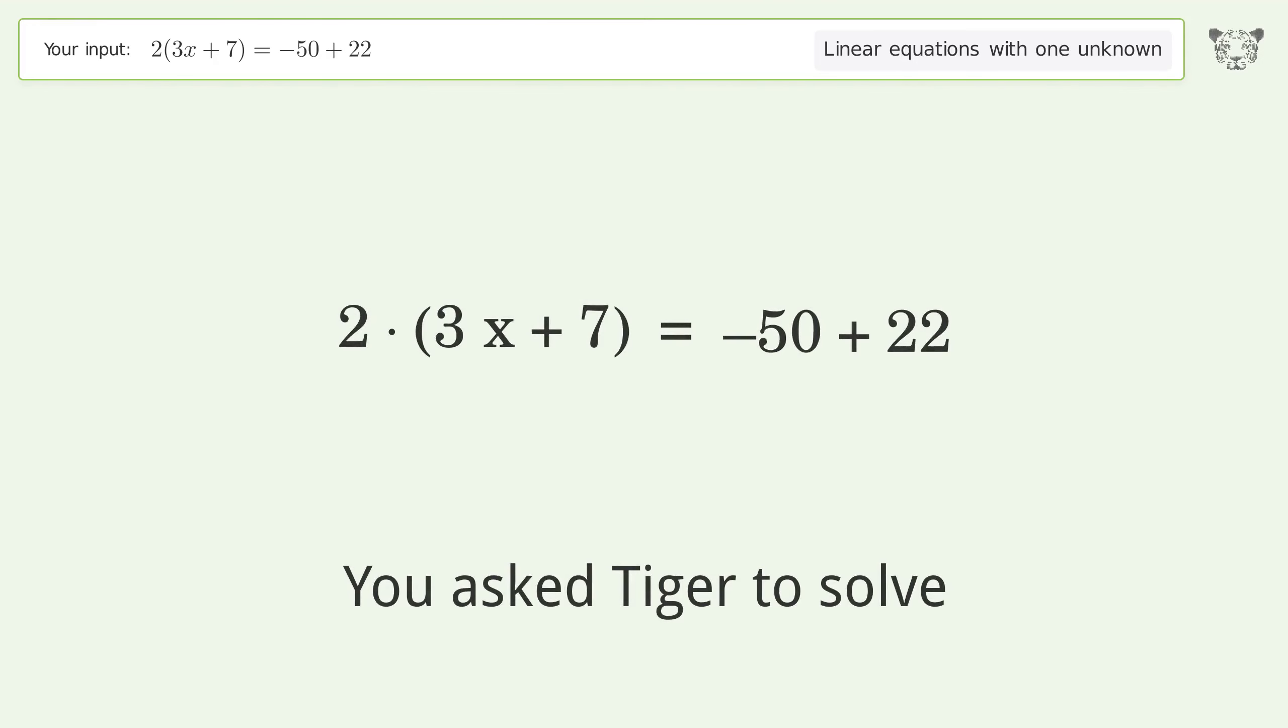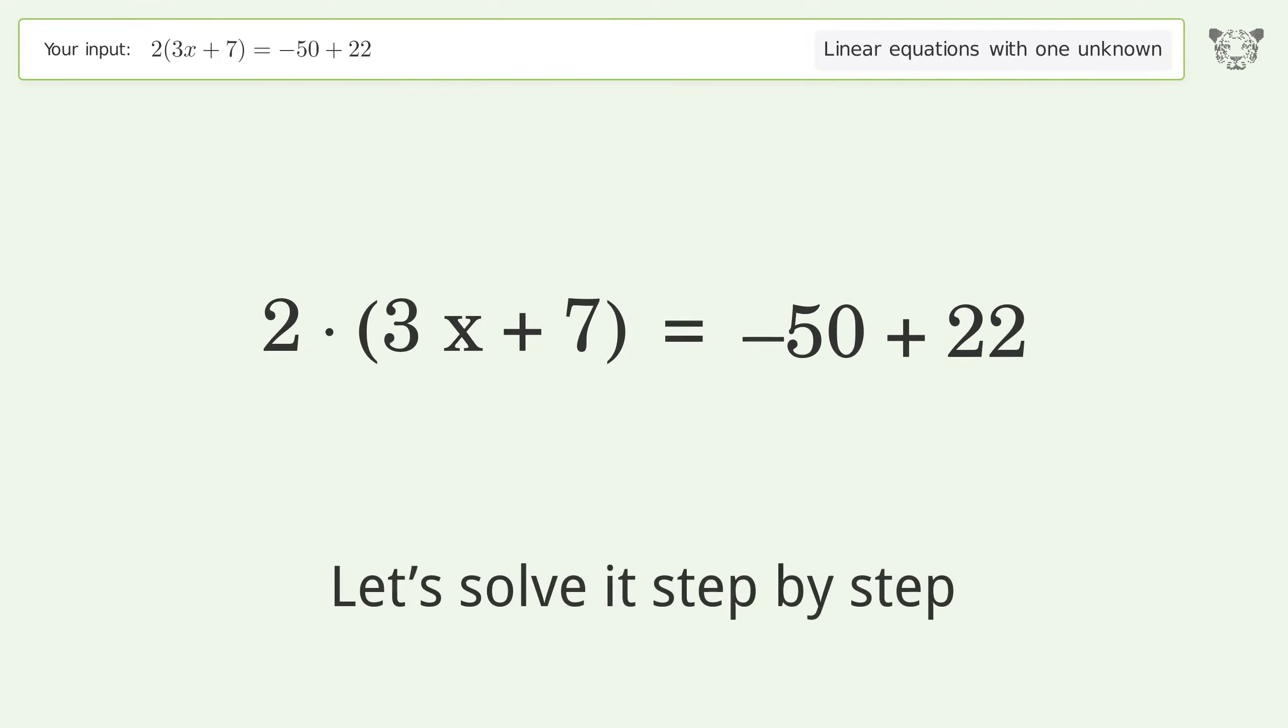You asked Tiger to solve this. It deals with linear equations with one unknown. The final result is x equals negative 7. Let's solve it step by step. Simplify the expression.